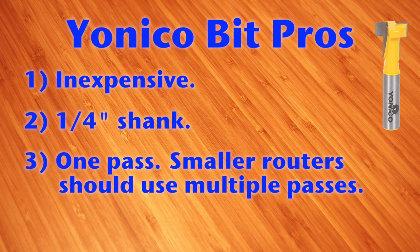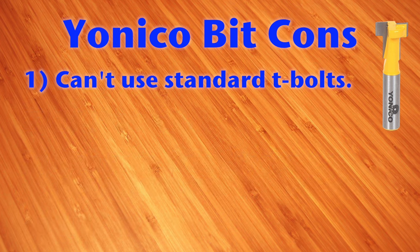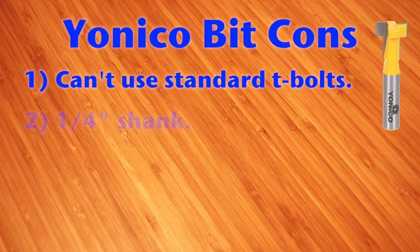But if you use a smaller router, I'd definitely recommend multiple passes. You can use cheap quarter inch hex bolts for T-bolts, but the slot is too small for standard T-bolts, unless you want to grind them down. And if you prefer half inch shanks, you're out of luck.